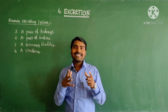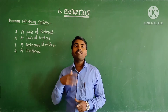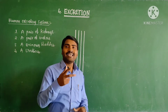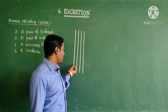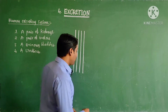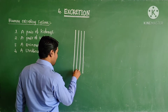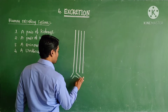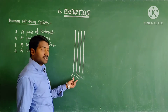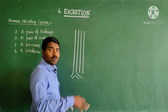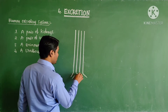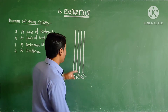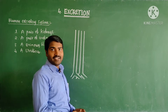Let us see the diagram of the excretory system so we can understand very clearly. You can draw a very neat diagram with the help of a scale. Draw 4 lines and simply divide these lines — separate the branch into 2 branches. Now here in this region we have to draw like a taste.